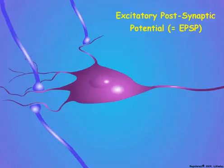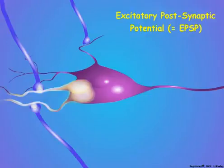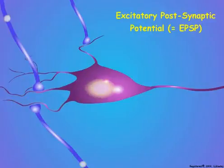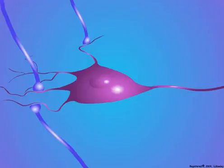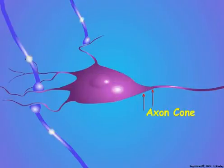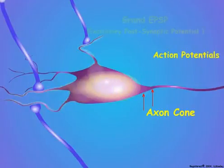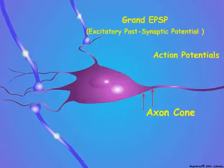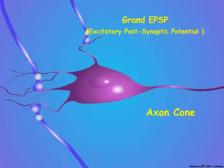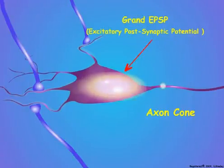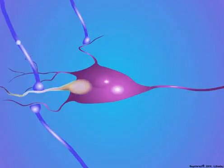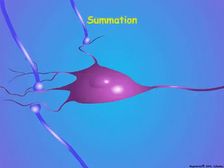EPSPs decrease in their intensity as they spread from their point of origin over the membrane of the postsynaptic neuron. However, if multiple EPSPs occur close together, they produce additive depolarizations that spread further over the surface of the postsynaptic neuron. If the depolarizations are sufficiently great to reach the axon cone, they are called a grand EPSP and they generate a new frequency of action potentials in the axon of the postsynaptic neuron. These additive depolarizations are called summation.